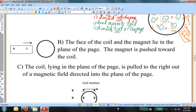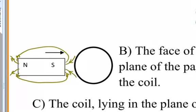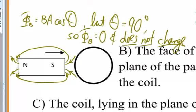Part B: The face of the coil and the magnet lie in the plane of the page, and the magnet is pushed toward the coil. As this magnet moves toward the coil, since the coil and magnet lie in the same plane, there is no increasing magnetic field passing through the coil. The angle between the magnetic field and the plane of the coil is 90 degrees. So the first question: is the flux changing? The answer is no, because the angle between the area of the coil and the magnetic field lines is 90 degrees. If the magnetic flux does not change, there is no induced current. In case B, there is no induced current in this loop.